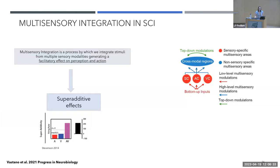Multi-sensory integration is the process by which we integrate stimuli from multiple sensory inputs, and this generates a facilitatory effect on perception and action. These effects are called super-additive, meaning for example that the response to an audiovisual stimulus is more than the sum of probabilities of the unimodal stimuli. This can be measured as a behavioral response like reaction time or as an evoked potential from the brain.